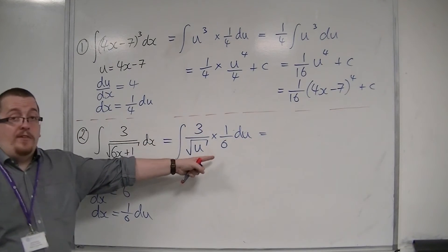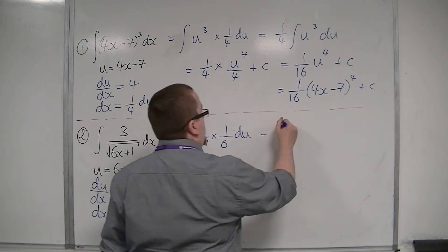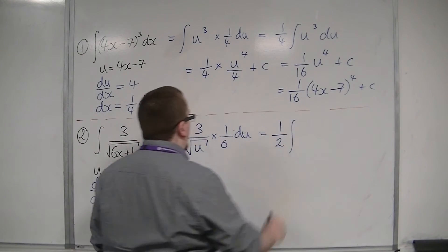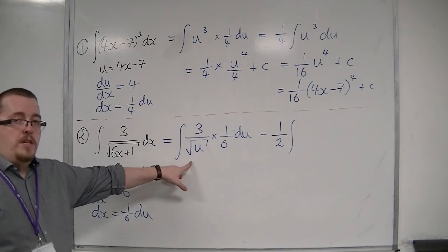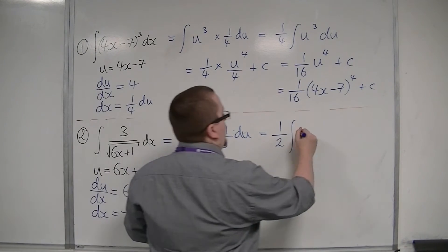I have 3 6ths, which is 1 half. I'm going to pull that outside of the integral. I then have 1 over root u, which is u to the minus 1 half.